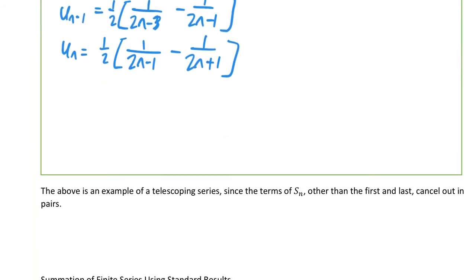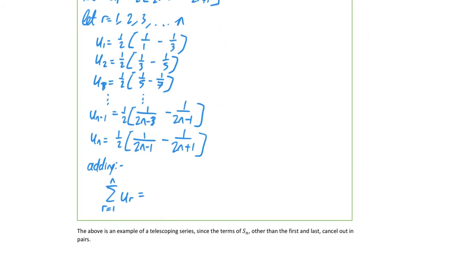Now we add all the terms. The sigma from r=1 to n of u_r: when you add, you can see the cancellations — the 1/3 cancels, the 1/5 cancels with 1/5, 1/7 cancels with something further down, and so on. You're left with one half times [1 minus 1/(2n+1)].